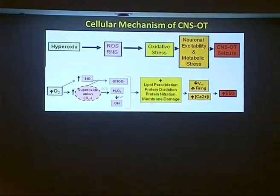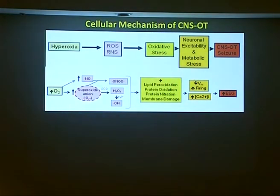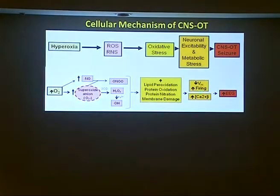Using AFM, we've demonstrated a correlating increase in membrane damage as we increase the concentration of oxygen. We think these correlates of hyperoxia-induced oxidative damage precede the results we see at the level of the cell — neuronal excitability and metabolic stress. We see a drop in membrane potential, depolarization, an increase in firing frequency, and an increase in intracellular calcium in response to hyperbaric oxygen. These are the precursors to disruption in brain activity contributing to the tonic-clonic seizure we can detect with EEG.